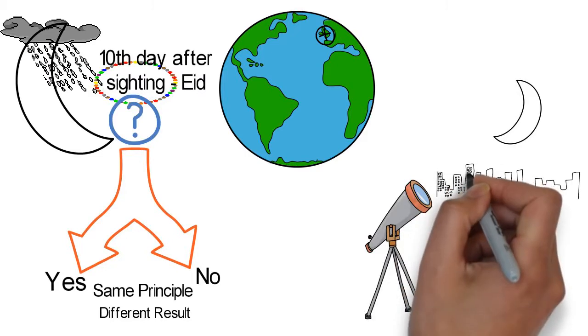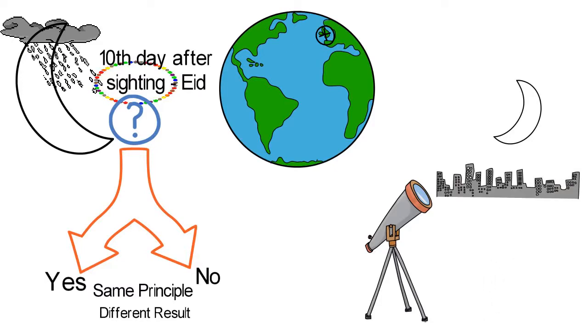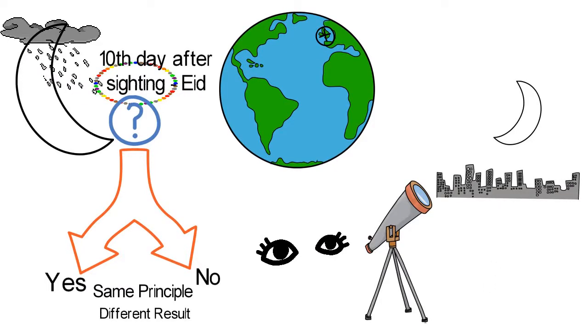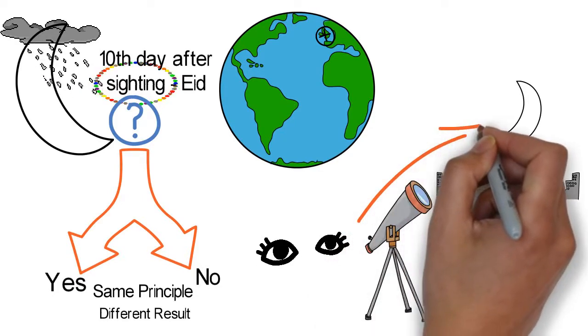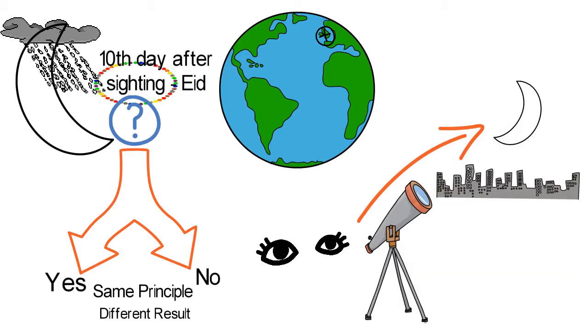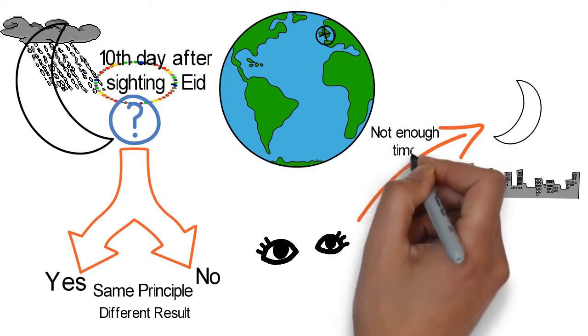But we investigated and our investigation showed that the moon, although it was above horizon after the sunset, it did not remain above horizon for enough time to be sighted by naked eye. This was the result of our investigation.